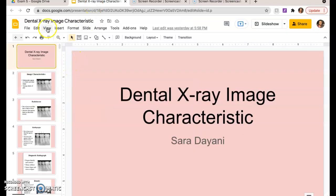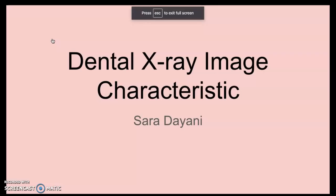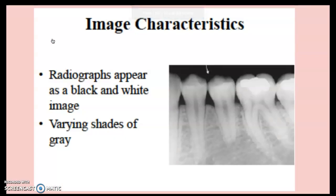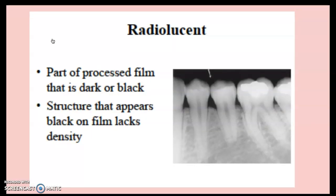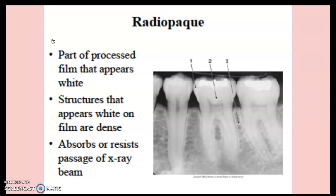This is a review of dental X-ray image characteristics, so it should be pretty quick. Radiographs appear as black or white images with varying shades of gray. Radiolucent refers to the dark or black area on the film — that part lacks density. Radiopaque refers to structures that appear white and are very dense; they absorb or resist the passage of the X-ray beam.